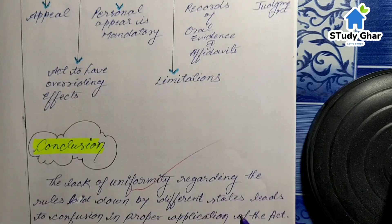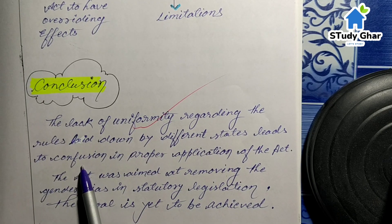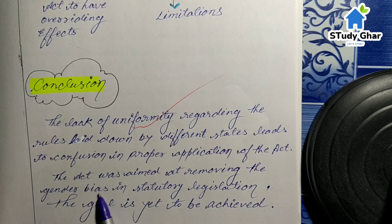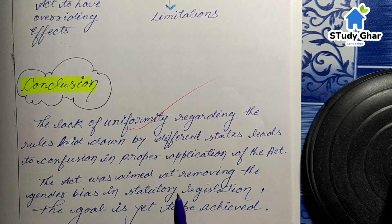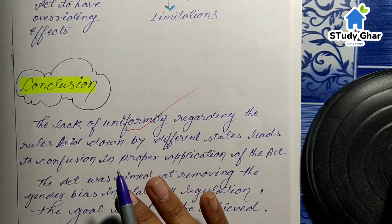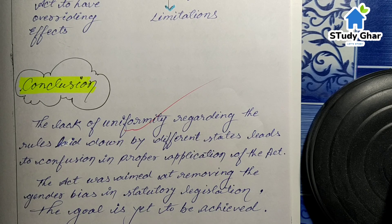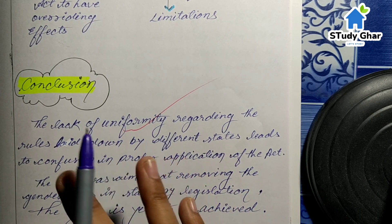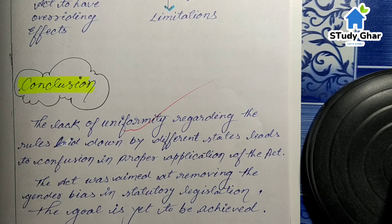In conclusion, the lack of uniformity regarding the rules laid down by different states leads to confusion in proper application of the Act. The Act was aimed at removing the gender bias in statutory legislation, and that goal is yet to be achieved. The purpose of family courts is to ensure that no single party — whether male or female — can impose superiority. There should be gender neutrality and no gender bias, and to address all these issues, family courts were established.